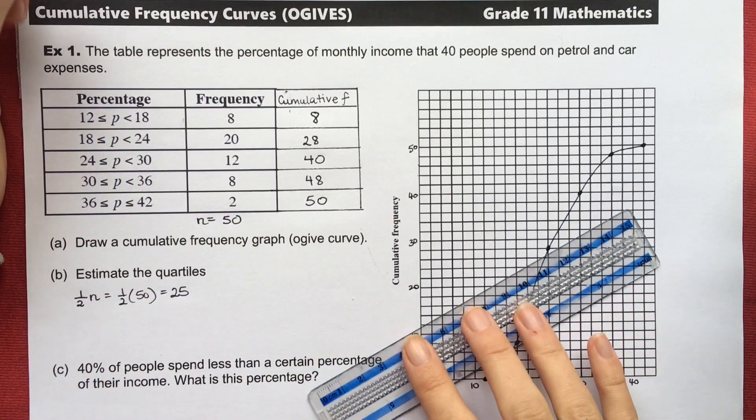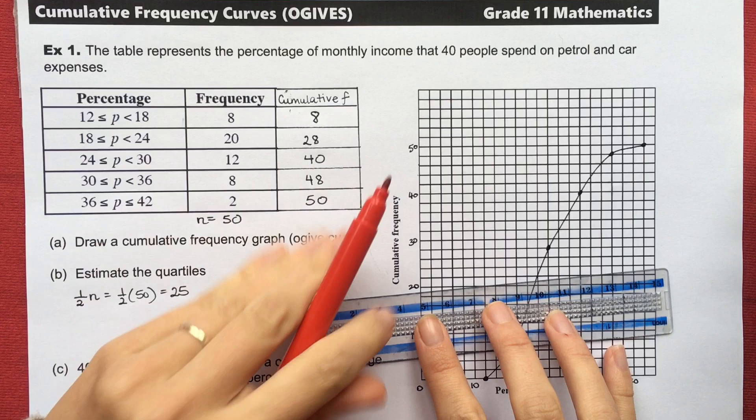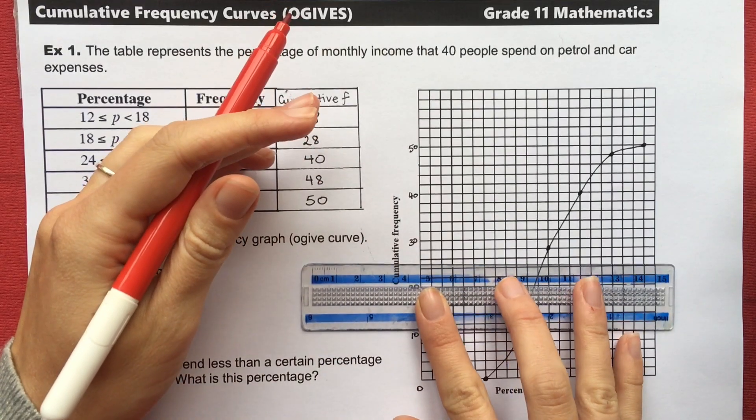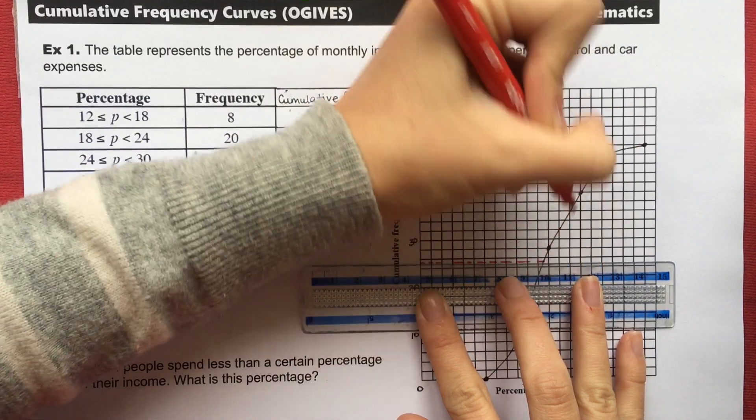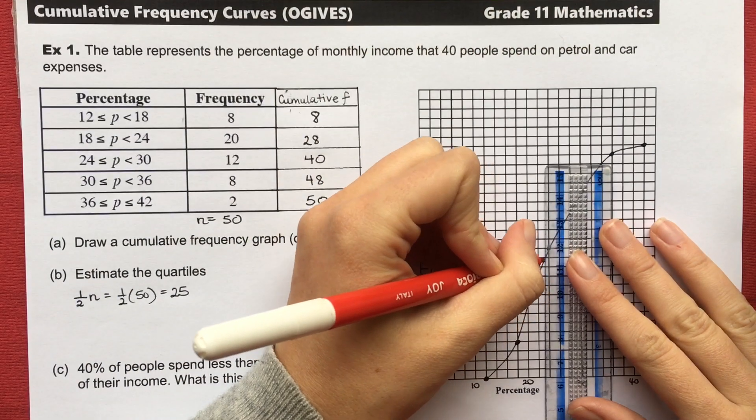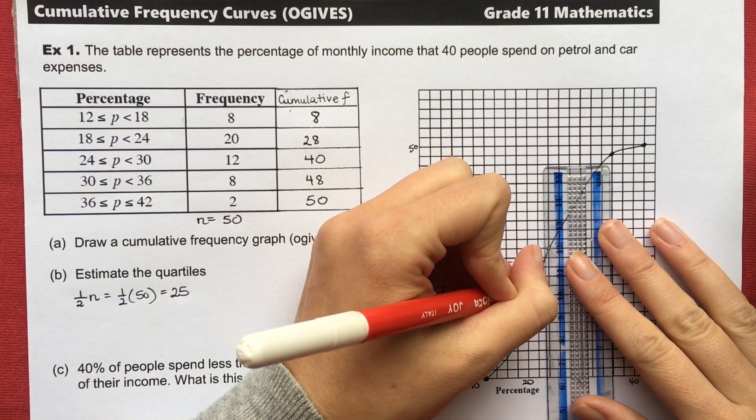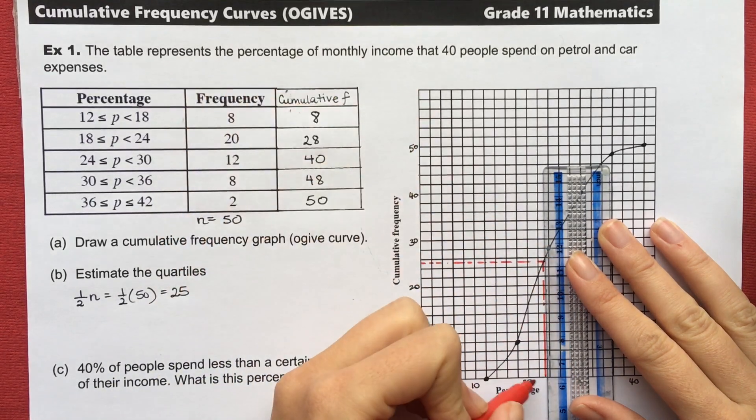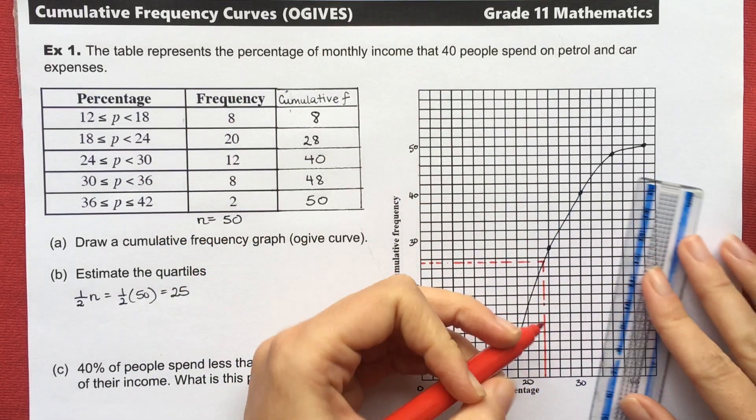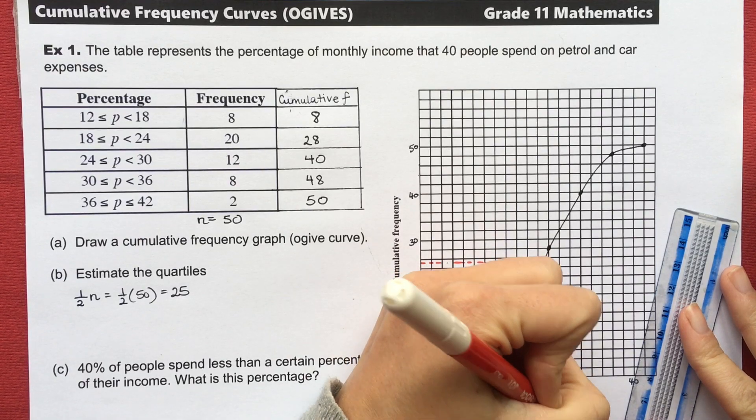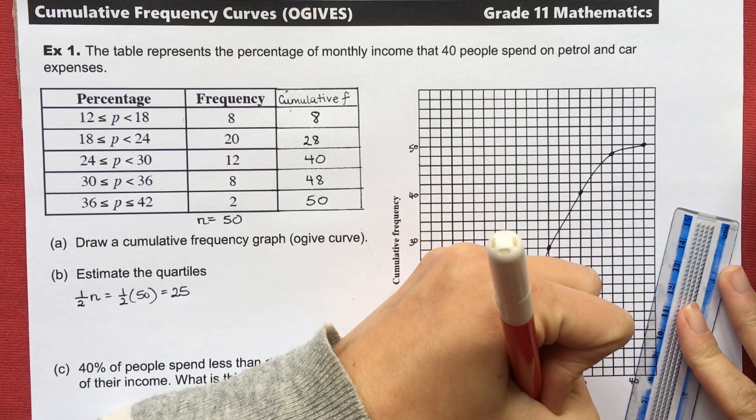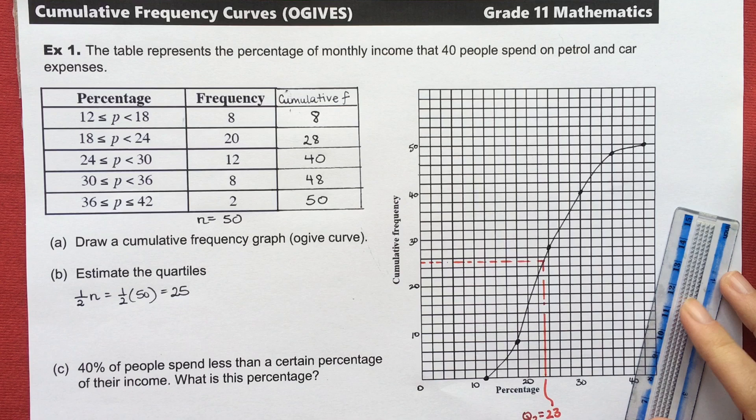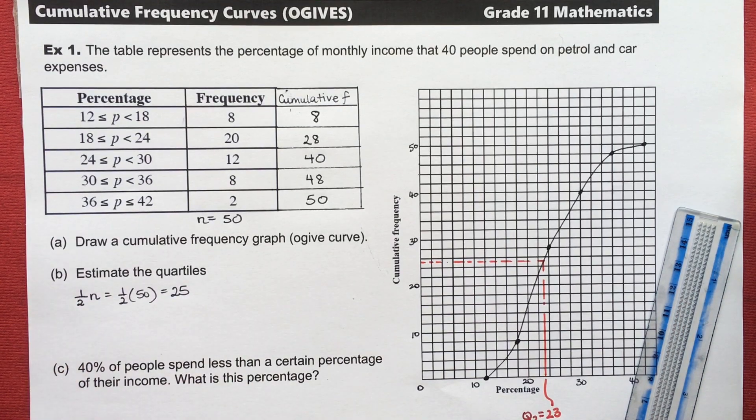So I'm going to use my ruler to draw a dashed line and then I'm going to use my ruler to read down and figure out what this point is. So 20, 22, this is roughly 23 is the median. So the median is 23. And we'll summarize these in a second.